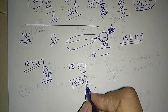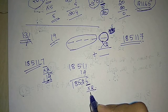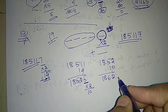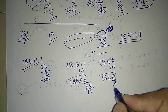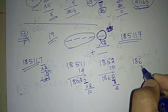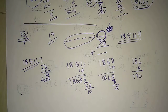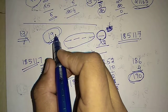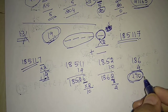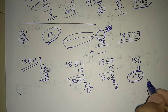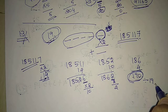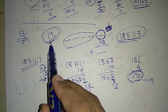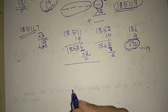Again, take the last digit, multiply it by 2 — answer becomes 10. Add it with the remaining digits — answer is 1862. Take the last digit, multiply it by 2 — answer 4, add with the remaining numbers — answer 190. There is no need to proceed further, because 19 times 10 is 190, so 190 is divisible by 19. Hence, the 6-digit number 185117 is divisible by 19.